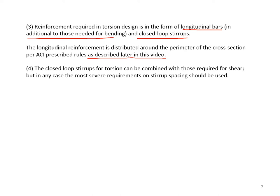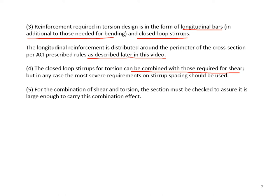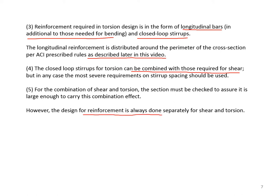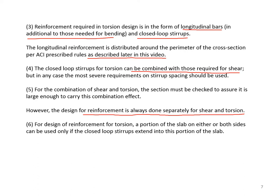The closed loop stirrups for torsion can be combined with those required for shear, but the most severe requirements on stirrup spacing should be used. For the combination of shear and torsion, the section must be checked to make sure it is large enough to carry the combined effect. The design of reinforcement, however, is always done separately for shear and torsion. For torsion reinforcement design, a portion of the slab on either or both sides can be used only if the closed loop stirrups extend into that portion of the slab.